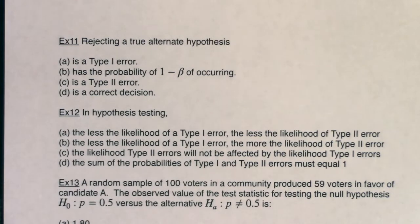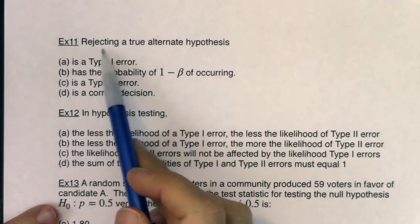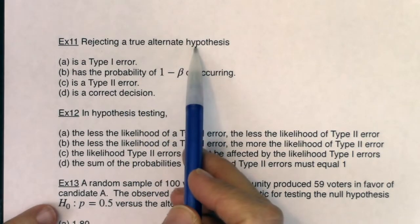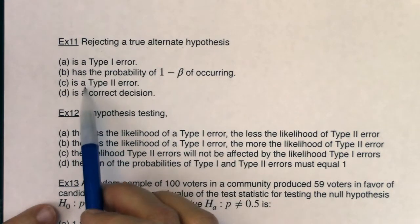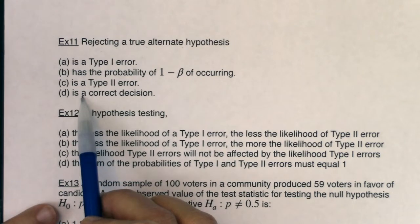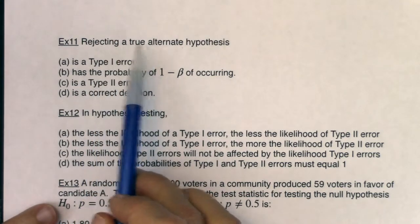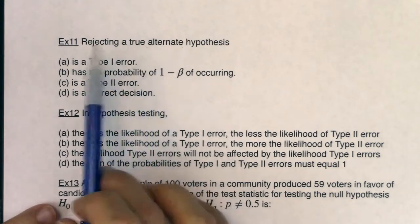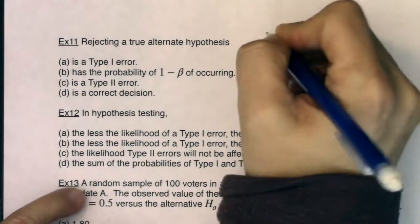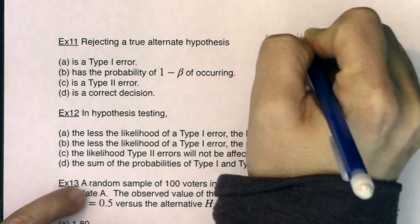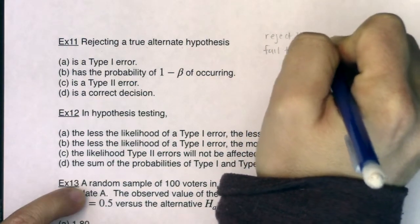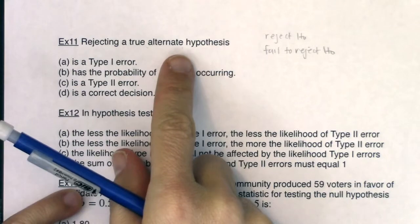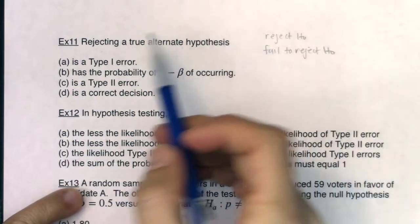Let's take a look at a few multiple choice questions together. Here's example 11. It says: rejecting a true alternate hypothesis. Is it a type 1 error? Has the probability of 1 minus beta of occurring? Is it a type 2 error or a correct decision? We would never actually say we're going to reject a true alternate — we always say we're going to reject H-naught or fail to reject H-naught.